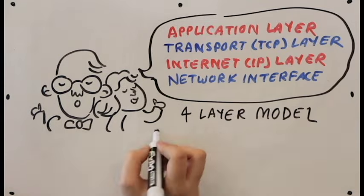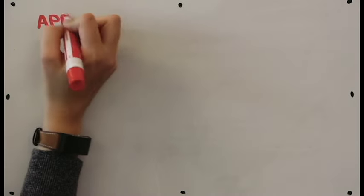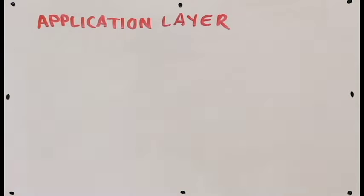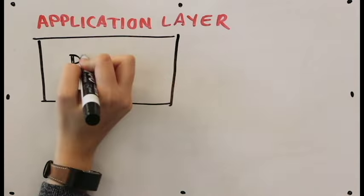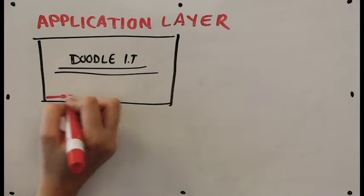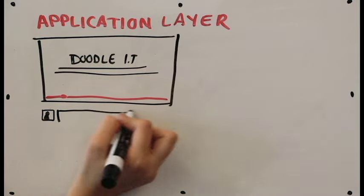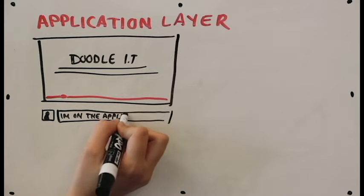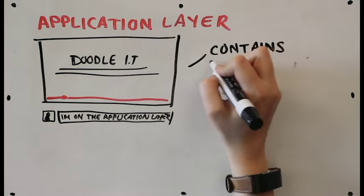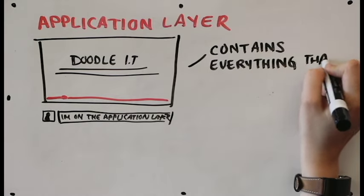Let's go a little more in detail about these layers now. First is the application layer. This one is the easiest to understand, because if you're watching this video on YouTube, you're on the application layer right now. Simply put, the application layer contains all programs, such as web browsers and web servers, that exchange information.